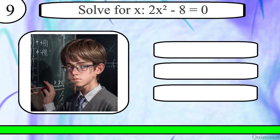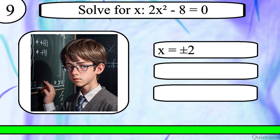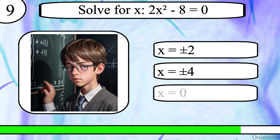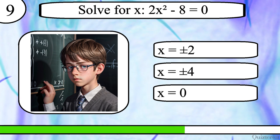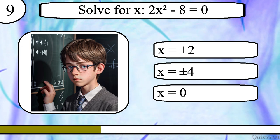Question 9. Solve for x, 2x squared minus 8 equals 0. x equals positive or negative 2, x equals positive or negative 4, or x equals 0. The correct answer is x equals positive or negative 2.